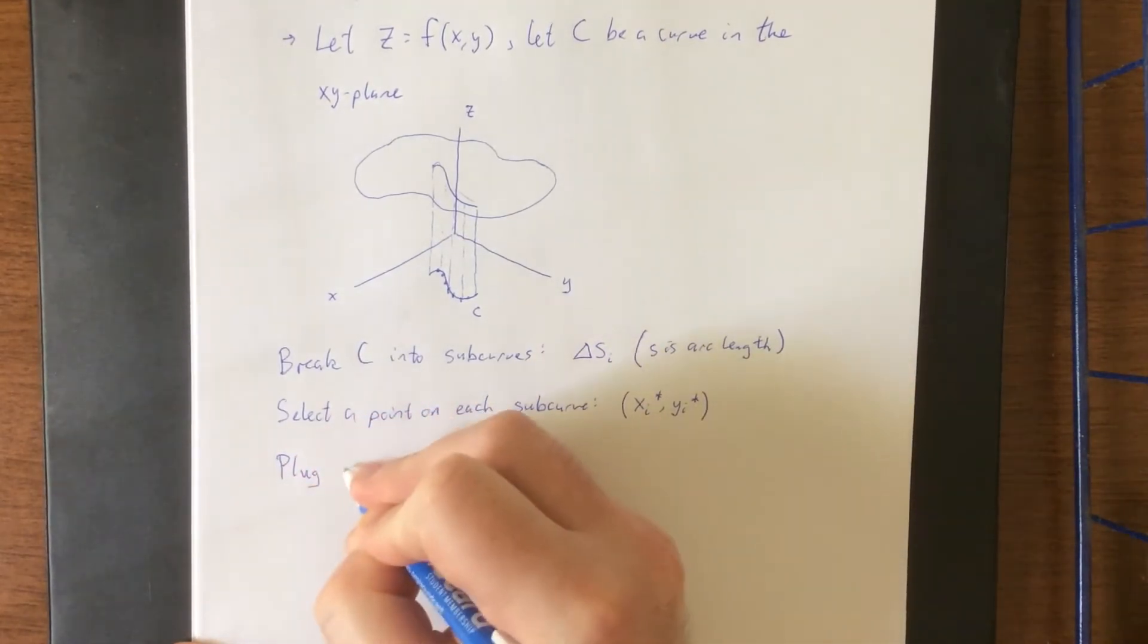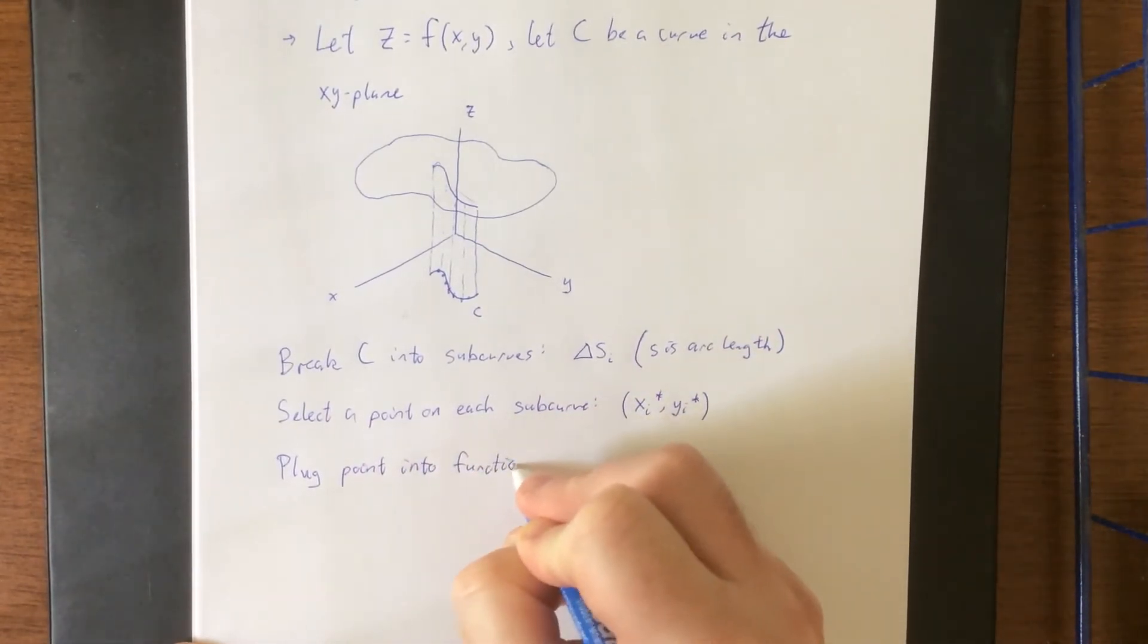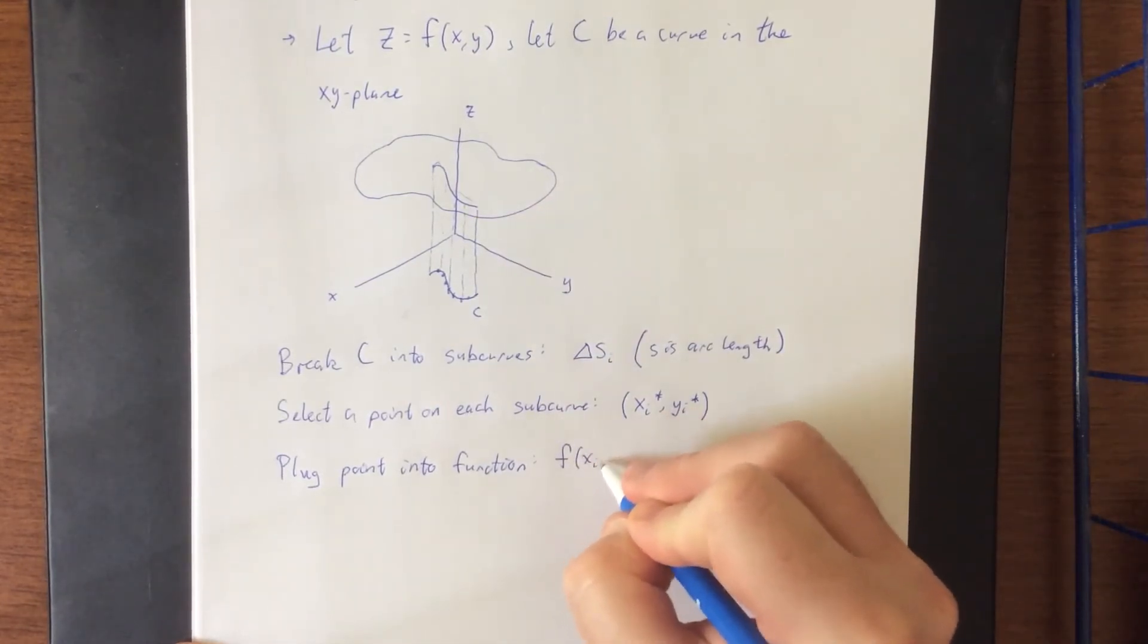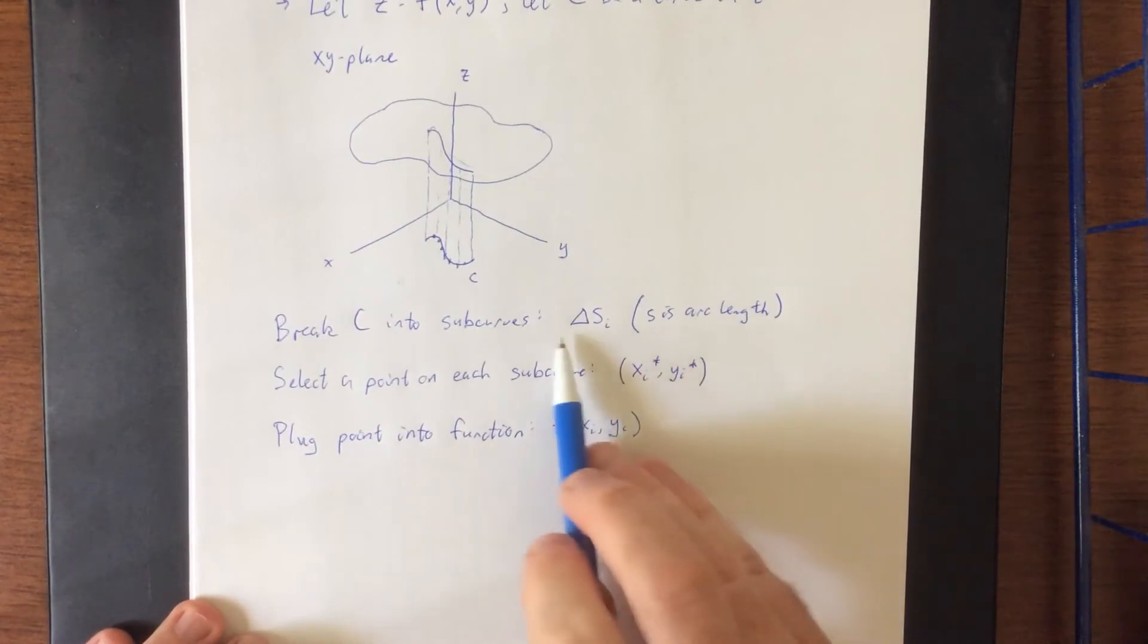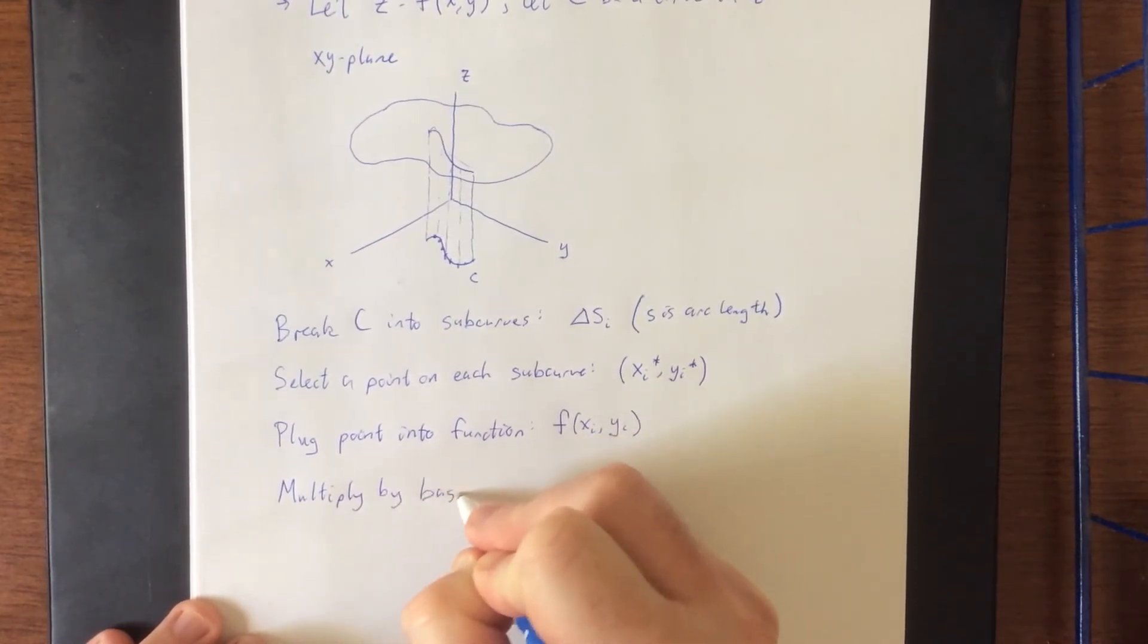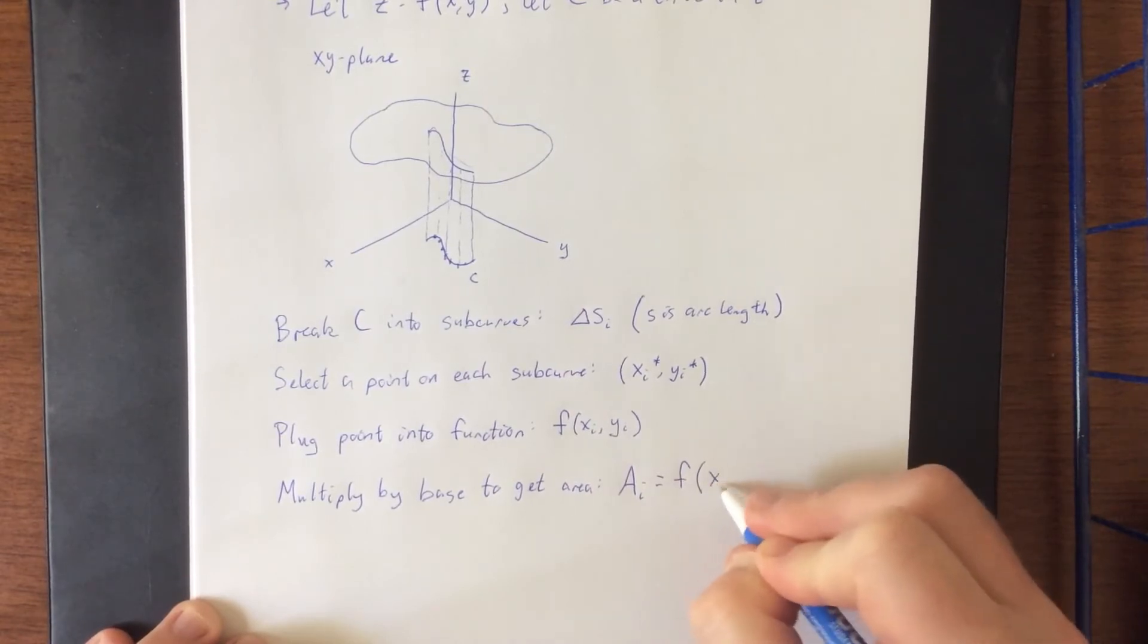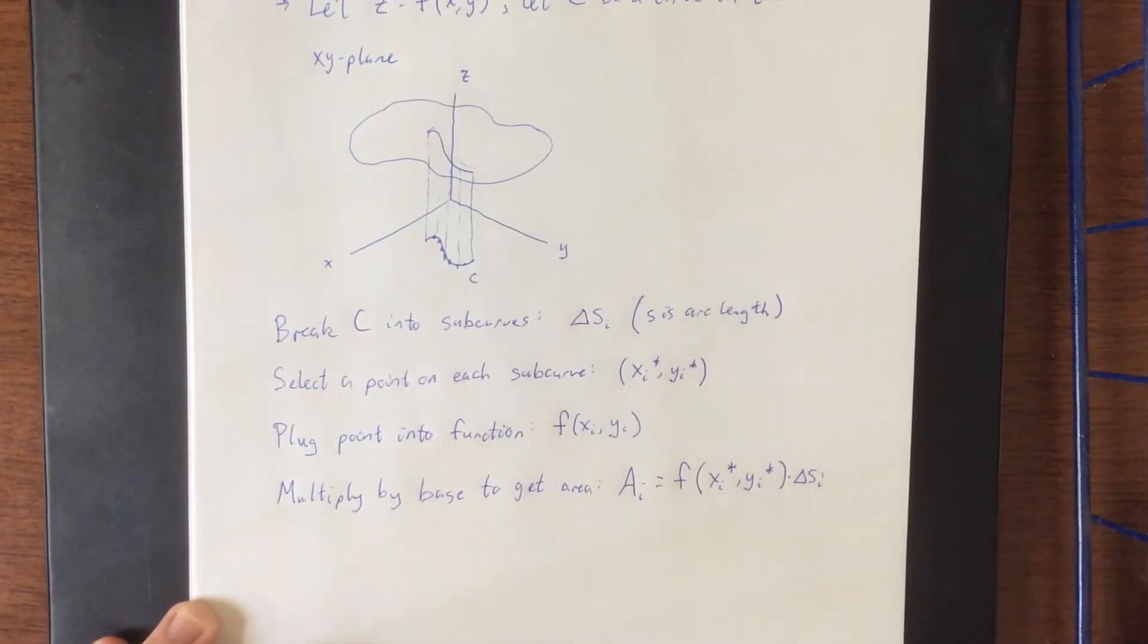So then what we do is we plug the point into the given function which is going to give us a z value. The z value will approximate the height for each of those rectangles that we're going to be creating. Then as soon as we multiply each of those heights by however long the base is, multiply by the base to get an area.